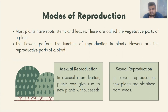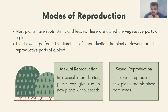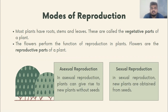Most plants have roots, stems, and leaves — you can observe these in almost every plant. These parts are called the vegetative parts of a plant. Simply put, the parts that can be eaten by us or other animals are the vegetative parts. Aside from these, plants also produce flowers in spring, and after flowering they produce fruits in the next season.